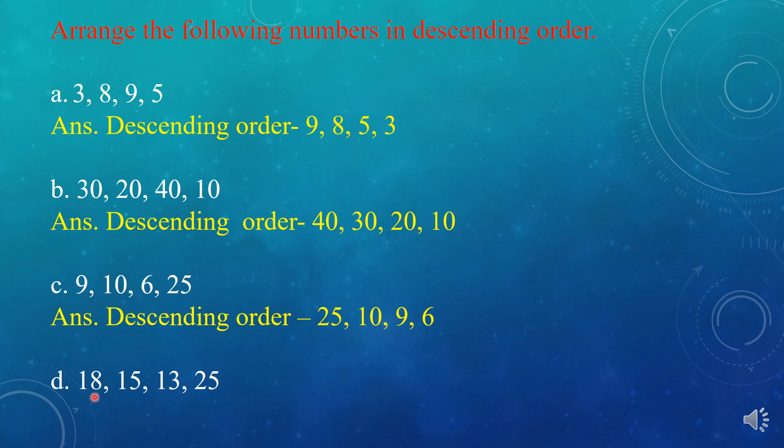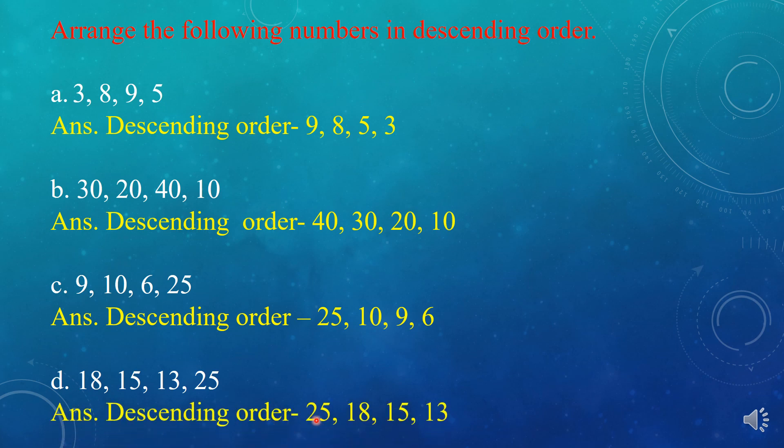D is: 18, 15, 13, 25. The descending order is: 25, 18, 15, 13. Now, you have learned how to write in ascending order and in descending order. Ascending order means we arrange the numbers in increasing order, and descending order means we arrange the numbers in decreasing order.